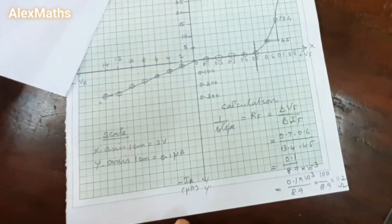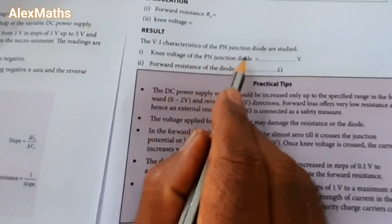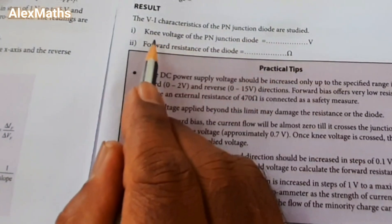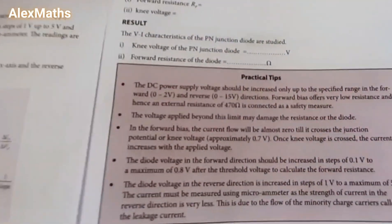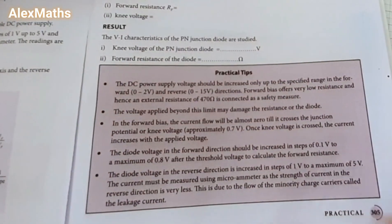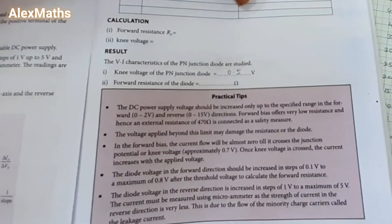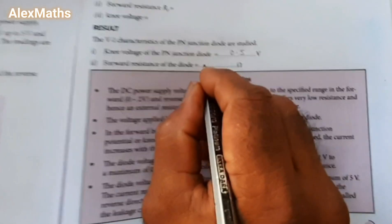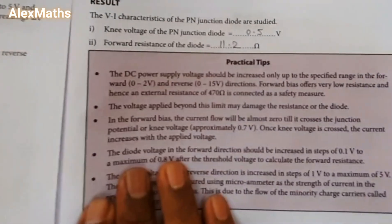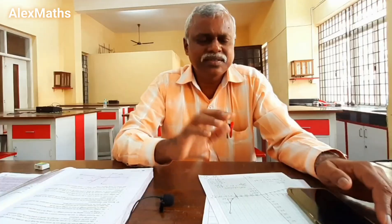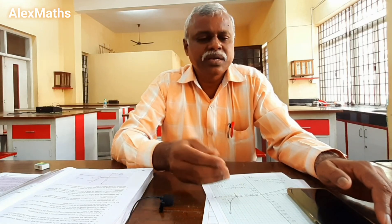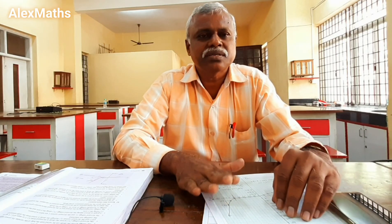Now for the result: the V-I characteristics of the PN junction diode are studied. The knee voltage of the PN junction diode is 0.5 volt. The forward resistance of the diode is approximately 11.2 ohm. This is the final answer. This is a very easy experiment — you just have to practice the graph. Wish you all the best.